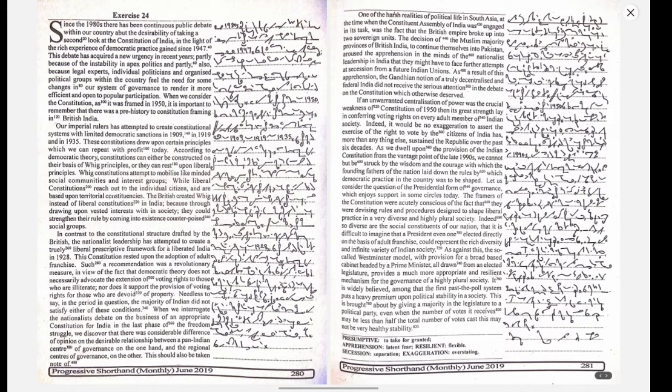If an unwarranted centralization of power was the crucial weakness of the constitution of 1950, then its great strength lay in conferring voting rights on every adult member of Indian society.